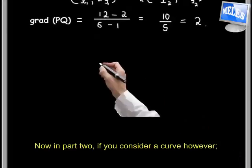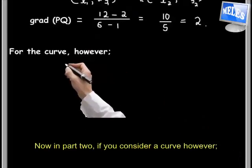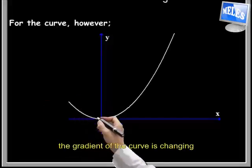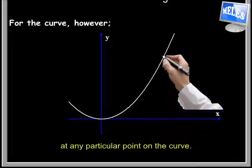Now in part 2, if you consider a curve, however—consider this curve shown in the graph—the gradient of the curve is changing at any particular point on the curve.